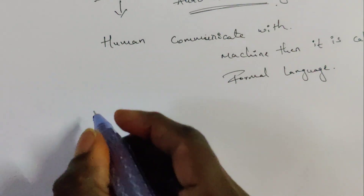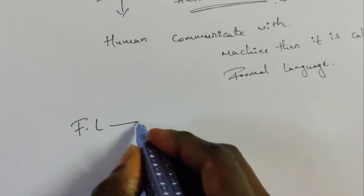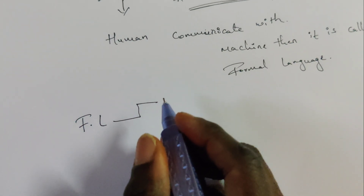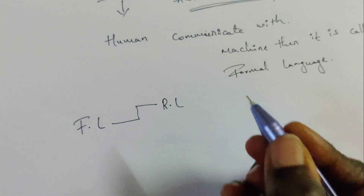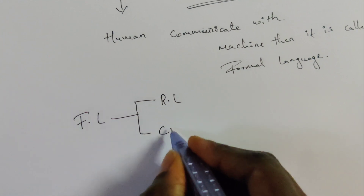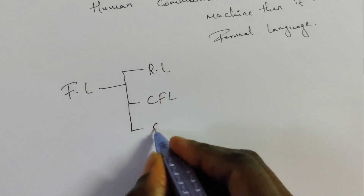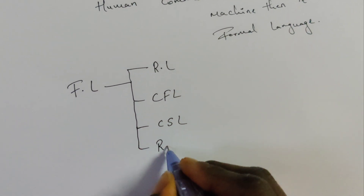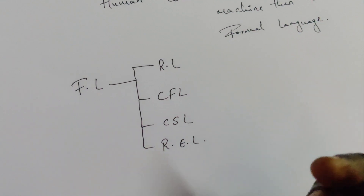Formal languages are four types. One is regular language. Another one is context-free language. Next is context-sensitive language. And the next one is recursively enumerable language.